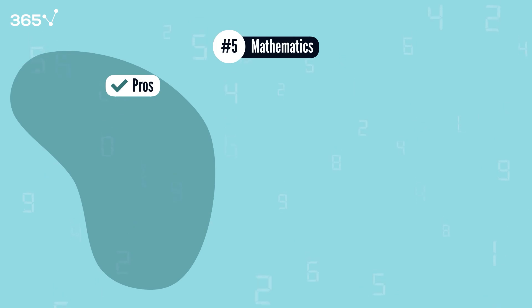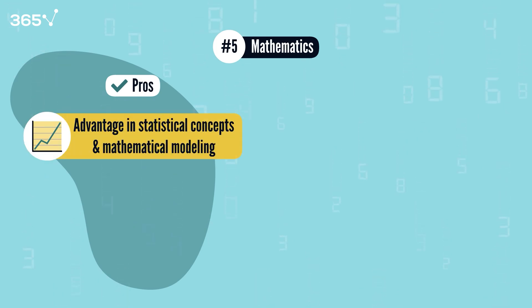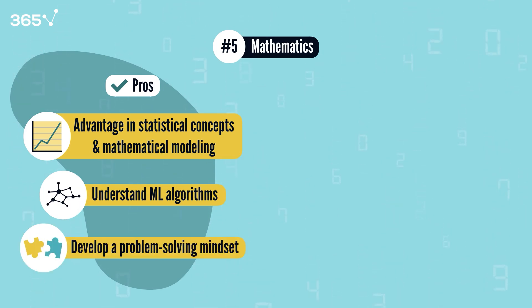Pros. Math grads have a natural advantage in statistical concepts and mathematical modeling. Thanks to your solid math background, you'll understand machine learning algorithms at their core. The problem-solving mindset you develop will serve you well across every area of data science.